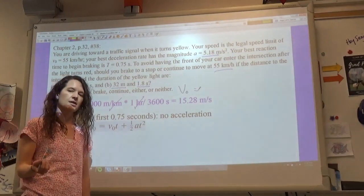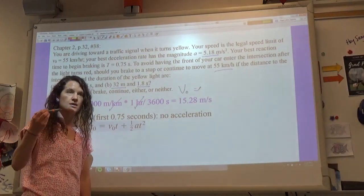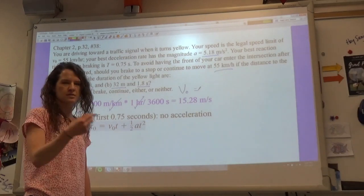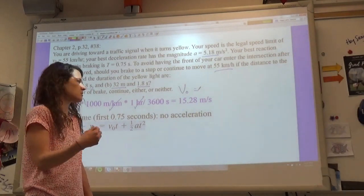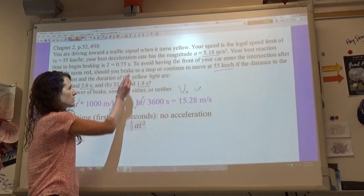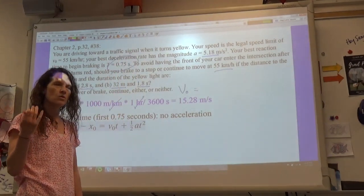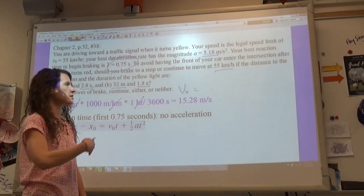And so we are also told that we have a reaction time. What that means is that from the moment our light turns yellow to the moment that our brain decides to either stop or go, there's an amount of time. And so that amount of time we're given is 0.75 seconds. And so whether we stop or go, we're going to cover some distance in that 0.75 seconds.